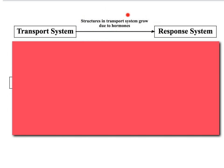Structures in the transport system grow due to hormones that are found in the response system. For example, stems are going to grow due to auxins and things like that. So the different hormones you learned about with the response system are going to affect growth in the transport system.